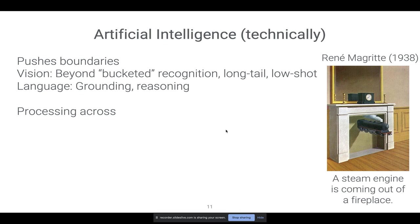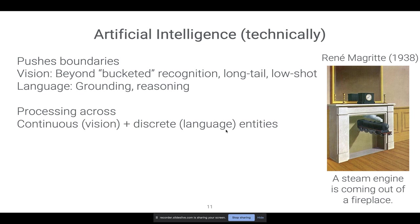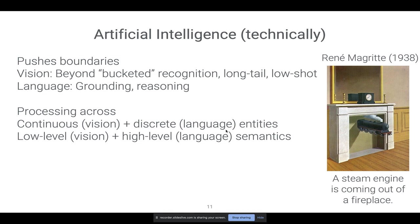Another technical challenge is that vision and language operate at fairly different semantic granularities. Images are continuous pixels, while language has discrete symbols — you need reasonable ways to reason across both. Any one pixel doesn't carry semantic meaning, but individual words already carry a lot of semantics. When you reason between these two modalities, you have to deal with these discrepancies. And when looking at the intersection of two modalities, it's easy for models to latch onto any one modality, making them fairly biased. You have to think about how to control for biases from both modalities and have a reasonably balanced model.